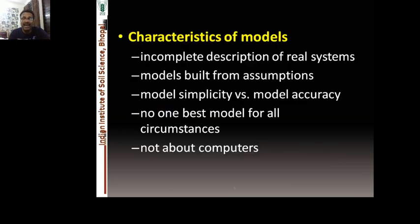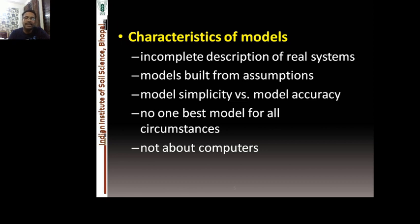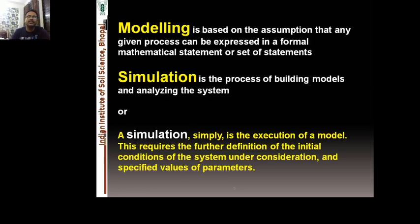What are the characteristics of models? A model is not a complete description of the real system — it is part of the system. Models are built with certain assumptions. There is a trade-off between model simplicity and model accuracy: the simpler the model, generally the more accurate the predictions. More complex models, like the dynamic simulation models used in agriculture, tend to have decreased predictability. Also, no one model is best for all circumstances — certain models work wonderfully for certain conditions but give poor predictions in others.